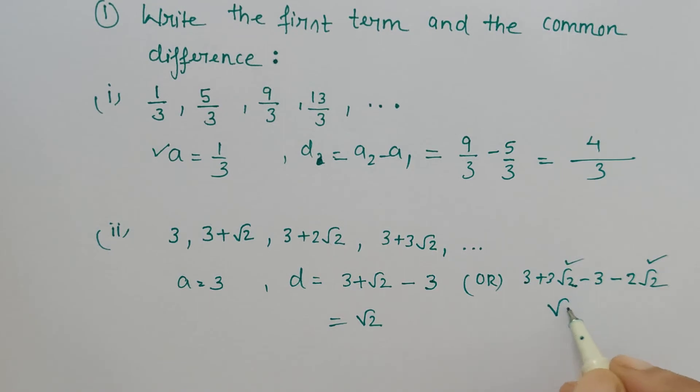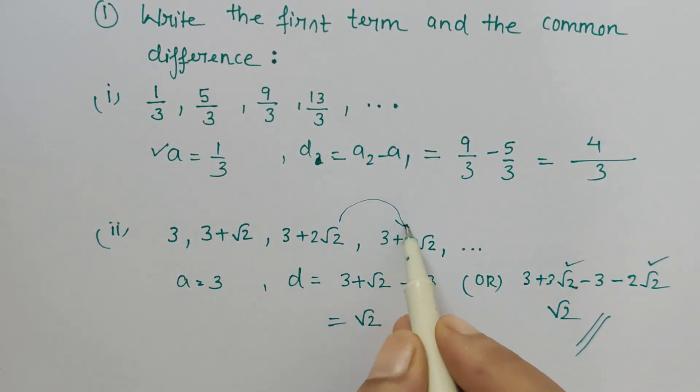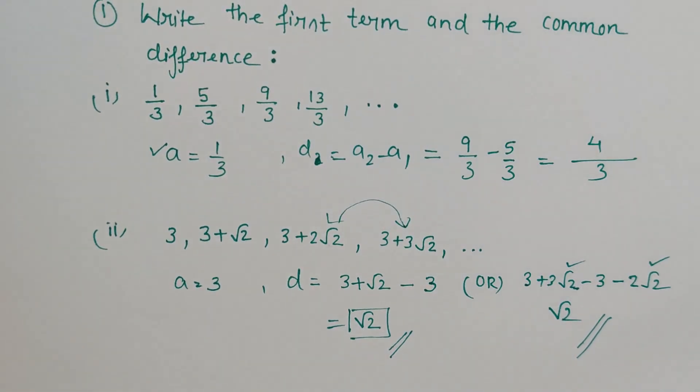So only √2 is left. If you choose this minus this, or this minus this, or this minus this, always you will get √2 as the common difference. Thank you.